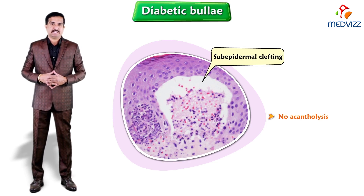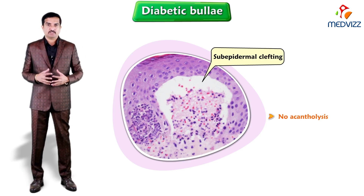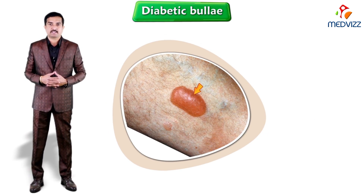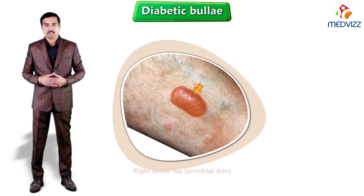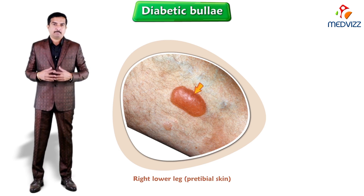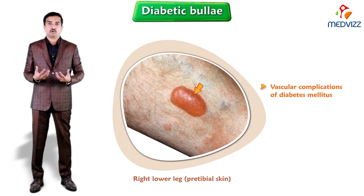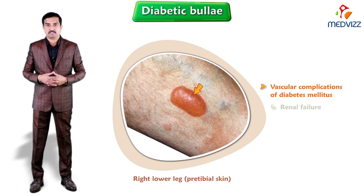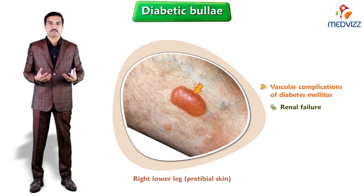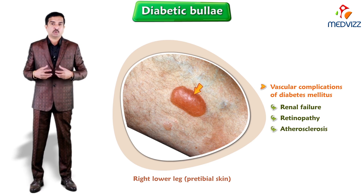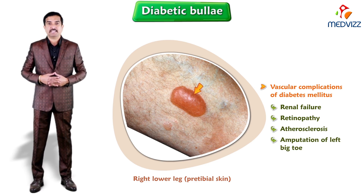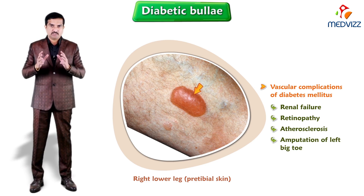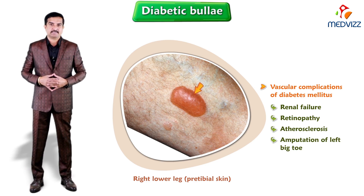Here is an example visible on the screen: a large intact bullae is seen on the pretibial skin on the right lower leg. The patient had many vascular complications of diabetes mellitus — that is, renal failure, retinopathy, and atherosclerosis resulting in amputation of the left big toe. This is what you need to know about diabetic bullae.